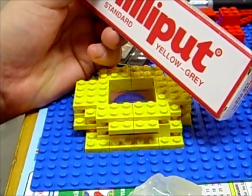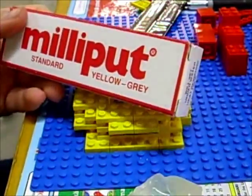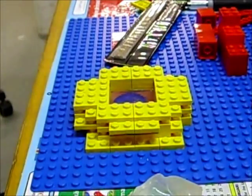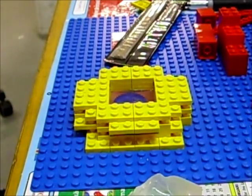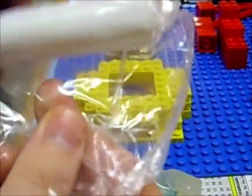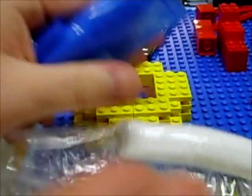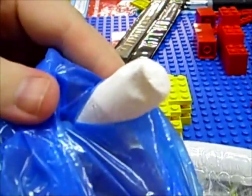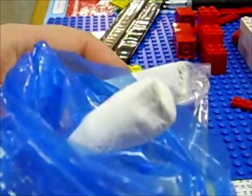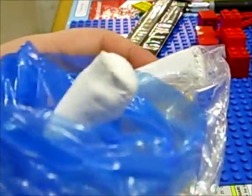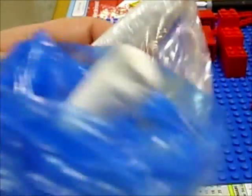Another problem I have with Milliput, I think it was the Milliput Superfine White. Here we have the white part, and here we have another white part. So two white parts you mix together. How are you supposed to know when you've mixed them thoroughly? They're both white.